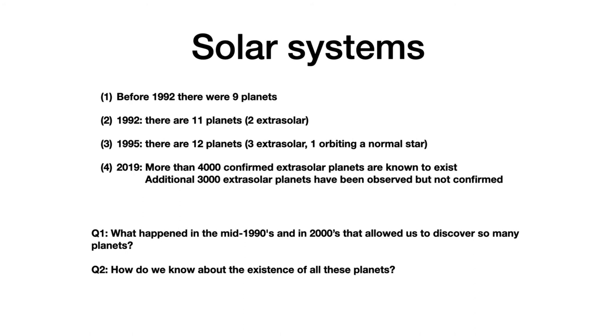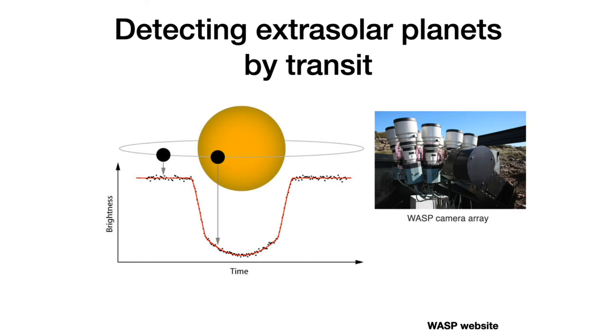You might think that the key to discovery of all these extrasolar planets was better telescopes or maybe better optics. But that's actually not the case. The key that made it possible to discover all these planets is computers. And the reason why we need really good computers to detect planets is that we don't detect most planets by direct imaging, but instead by variation of the starlight from their parent star.